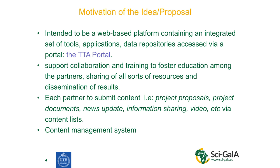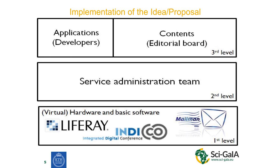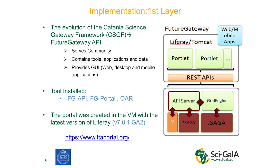Basically we wanted it to be a content management system. Upon implementation we have three layers. The first layer is the implementation of our system. Initially it was from the Catania Science Gateway, but when we went to the Hackathon in Catania we shifted it to the Future Gateway API. The aim was to have tools, applications, and data, and to run our web management system on web, desktop, as well as mobile.